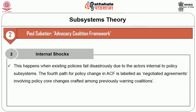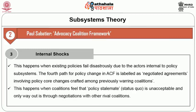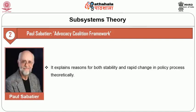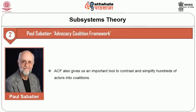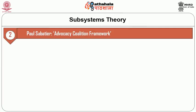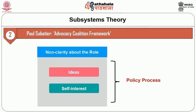The second way which can cause change in policy is through external perturbations or shocks, consisting of changes in socio-economic conditions, regime change, outputs from other subsystems, or disaster. External shocks are capable of changing policy core beliefs and often lead to rapid changes in policies. They can also lead to replacement of a dominant coalition by a minority coalition in a policy subsystem. A third path added later leads to policy changes through internal shock — this happens when existing policies fail disastrously due to actors internal to policy subsystems. The fourth path for policy change in ACF is labeled as negotiated agreements, involving policy core changes crafted among previously warring coalitions. This happens when coalitions feel that policy stalemate is unacceptable and the only way out is through negotiations with other rival coalitions.